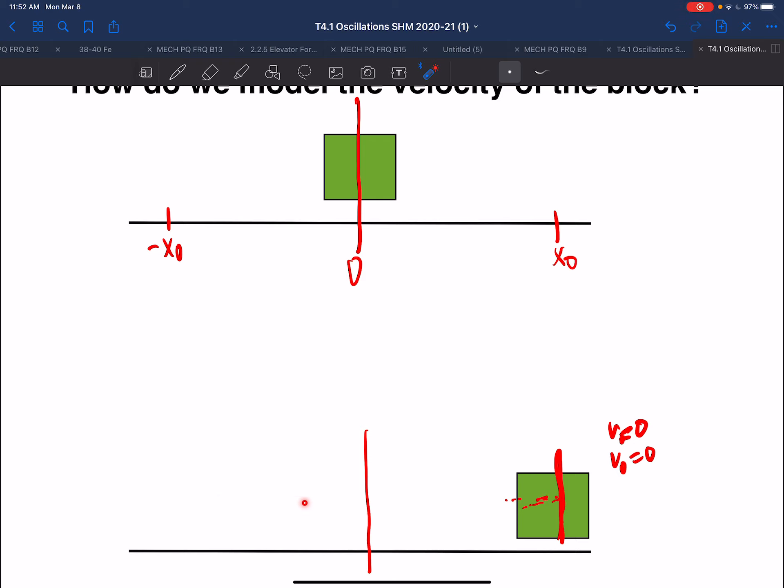And then it speeds up again. But what's interesting is we have v equals 0 here. We have v equals 0 when we're over in that location, and we have a maximum in the middle. So as we go back and forth: increase, decrease, 0, increase, decrease, 0.